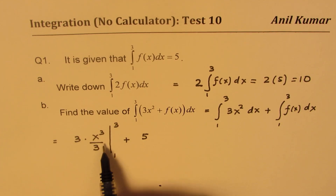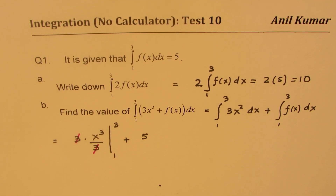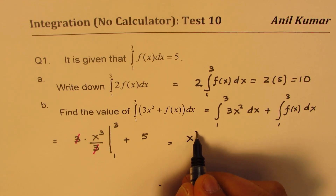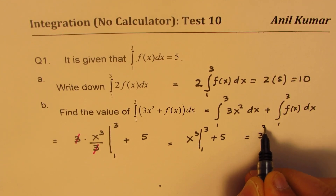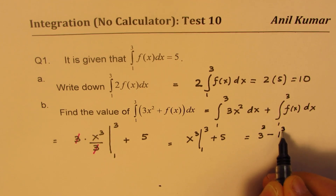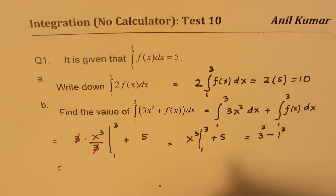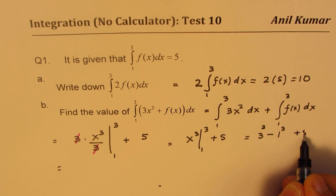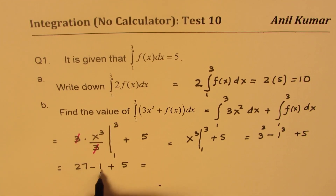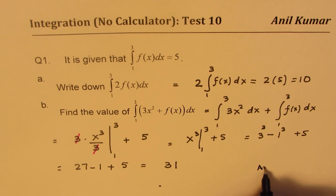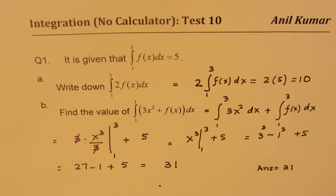To evaluate the first part, we simplify by cancelling the 3's, giving us x³ evaluated from 1 to 3, plus 5. That equals 3³ minus 1³, so 27 minus 1 plus 5. That gives us 26 plus 5, which is 31. So our answer is equal to 31. I hope the steps are absolutely clear.